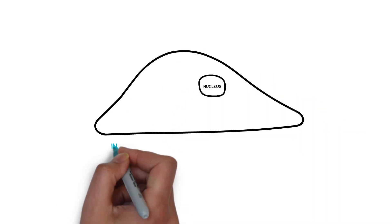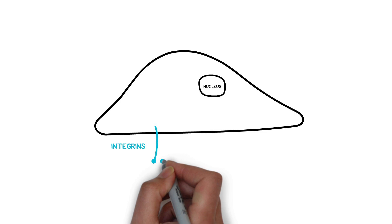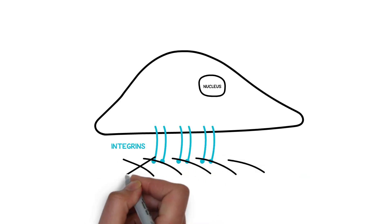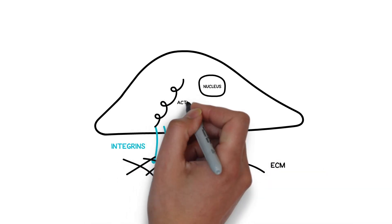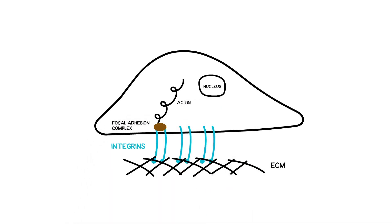Extensive research has identified integrins to be the primary transmembrane molecules that connect the extracellular matrix to the internal actin cytoskeleton via focal adhesion complexes.